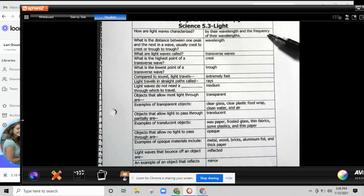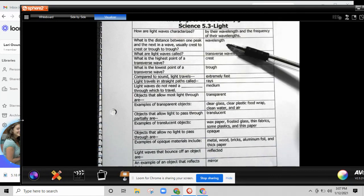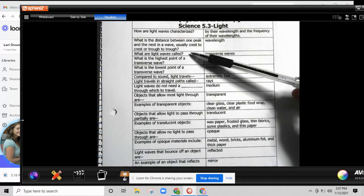What is the distance between one peak and the next in a wave? Usually crest to crest or trough to trough, and that's called a wavelength.